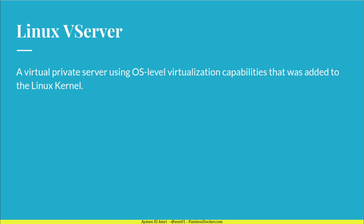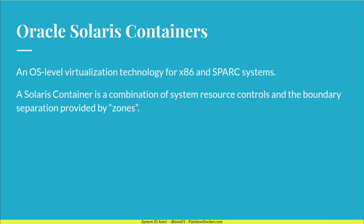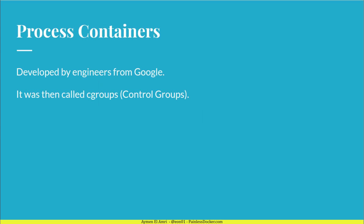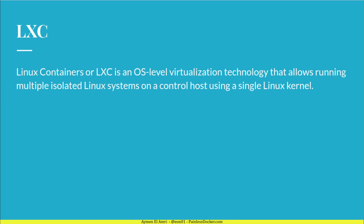Linux VServer is a virtual private server using OS-level virtualization capabilities that was added later to the Linux kernel. Oracle Solaris Containers is also an OS-level virtualization technology designed for x86 and SPARC systems. A Solaris container is a combination of system resource controls and the boundary separation provided by zones. OpenVZ is also an OS-level virtualization technology for Linux that allows you to create multiple secure isolated Linux containers known as VPS. Process containers were developed by engineers from Google and are more known as cgroups, or control groups.